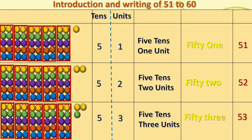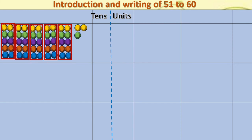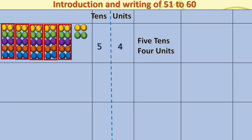Same thing — we are repeating again and again to get the next number. This is fifty-three. Next, one more single added. So, we got five tens and four units. We will write five tens, four units. The number is fifty-four — fifty and four.